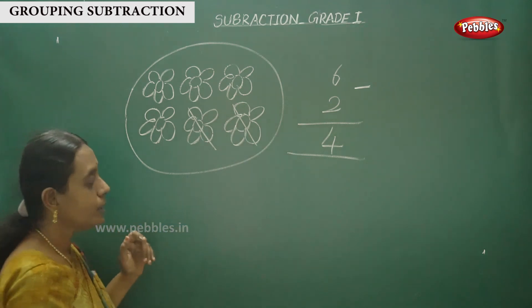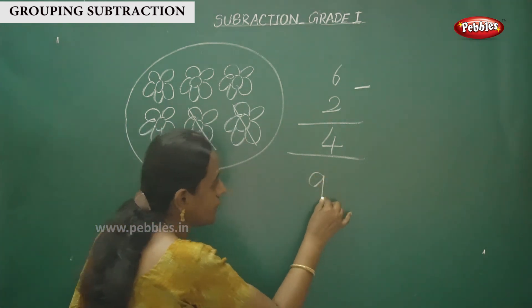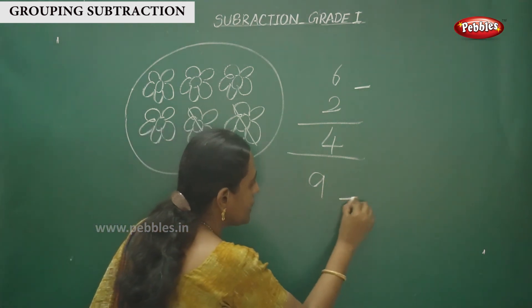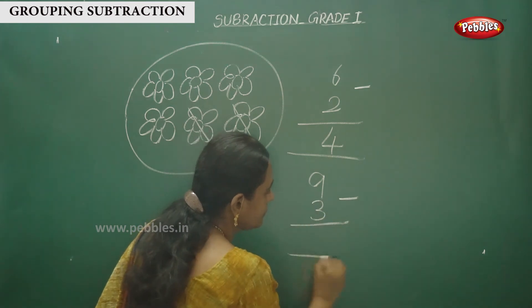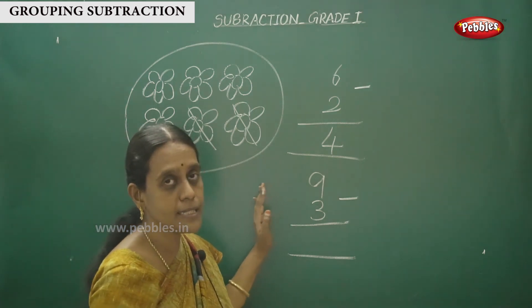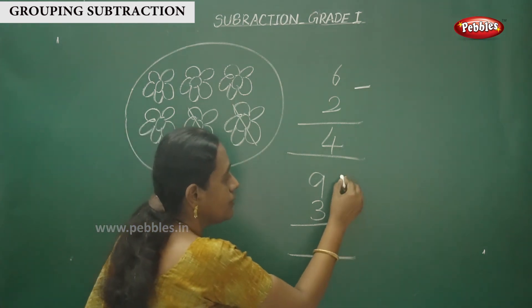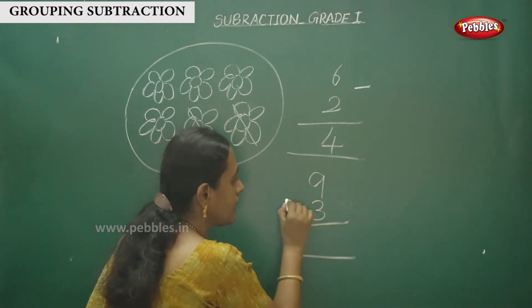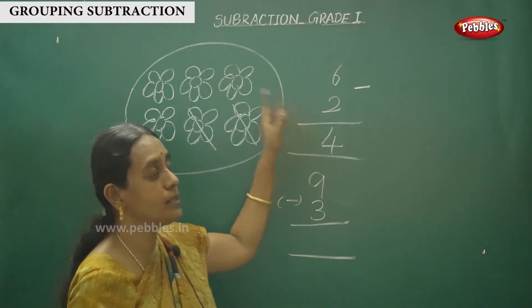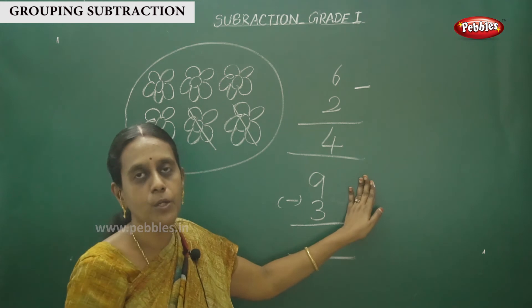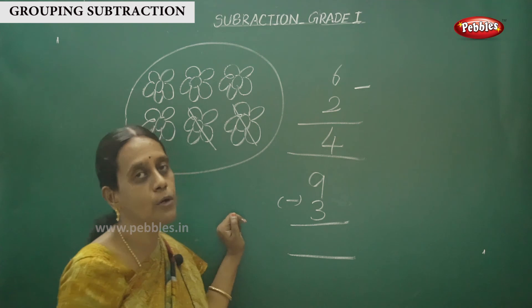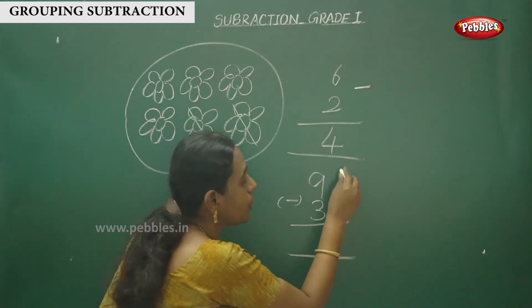This is the way to subtract by representing one diagram. Another method, you have to subtract here. This is the number 9. What is this number? This is 9 minus 3. This is the subtraction sum, 9 minus 3. First you have to draw lines. You have to draw 9 lines.